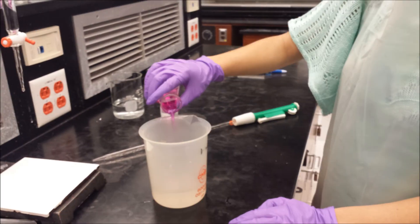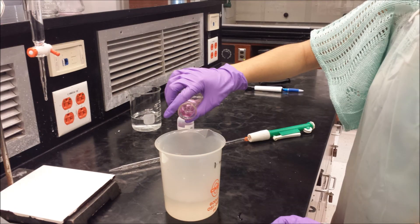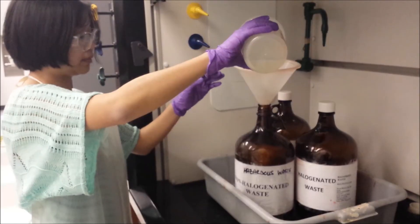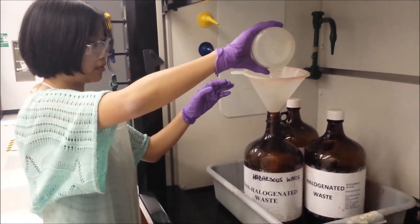Clean the Erlenmeyer flask and reset the trials two more times. Refill your burette after each finished trial. Discard your finished titration into the non-halogen waste container.